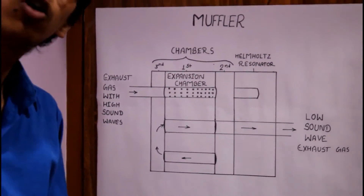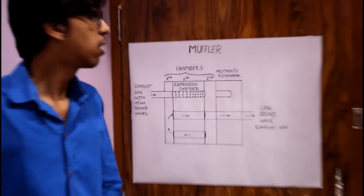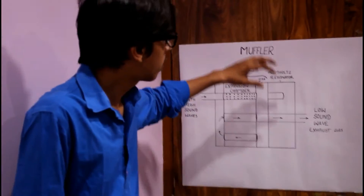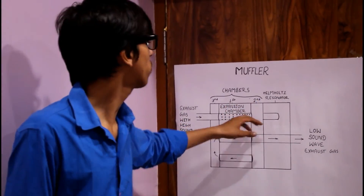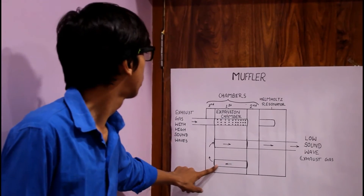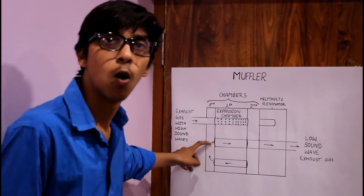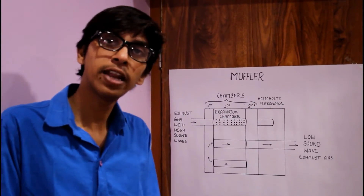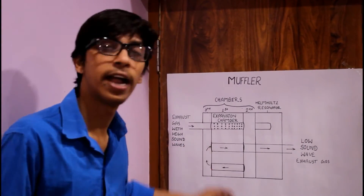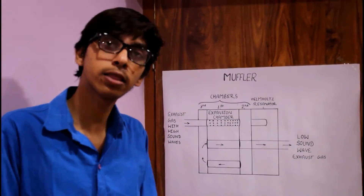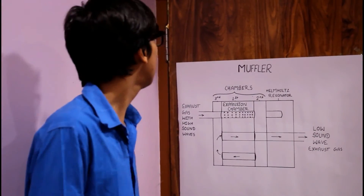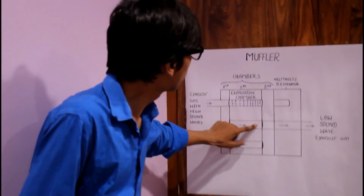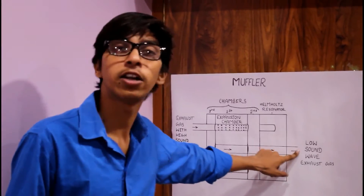After this, the low sound waves of the exhaust gases are ready to be released into the atmosphere. These low sound waves go through this pipe to the third chamber, where any remaining sound waves collide with the walls and due to friction are reduced further.